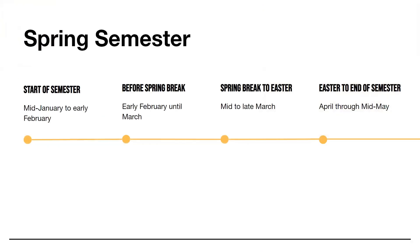Let's start by looking at how a typical spring semester might break down with different breaks. We're in the start of the semester period — mid-January to early February. Then the second segment is before spring break, which for Georgetown will be early February until March, because typically spring break falls at the very beginning of March. Georgetown also has an Easter break, so a lot of deadlines will fall in that period between spring break and Easter break. The final period is Easter to end of semester, April through mid-May.